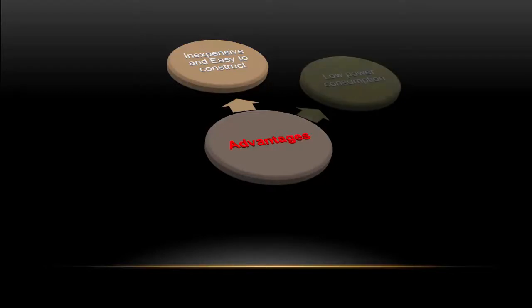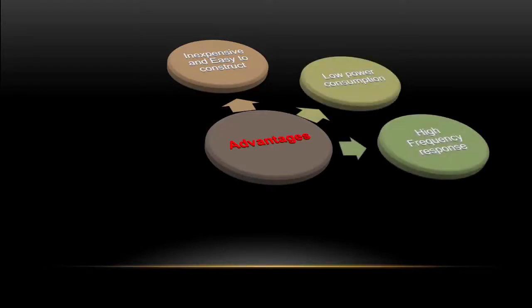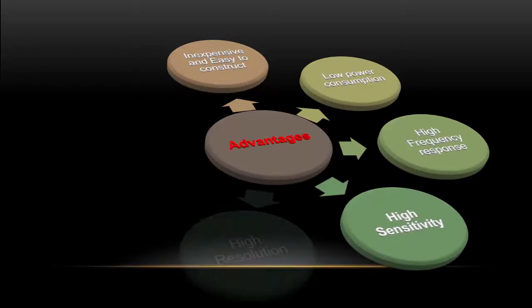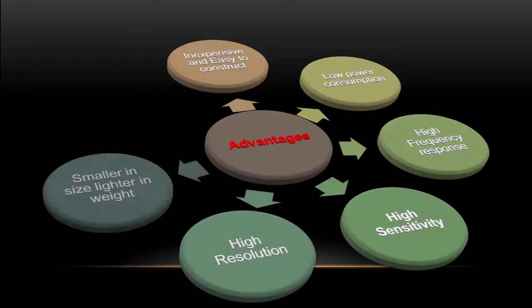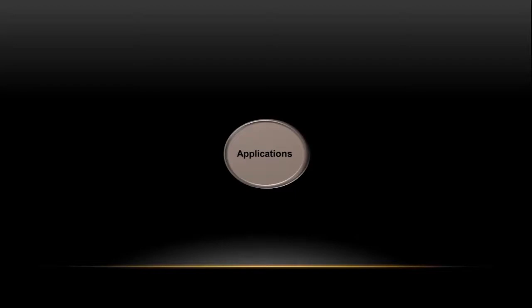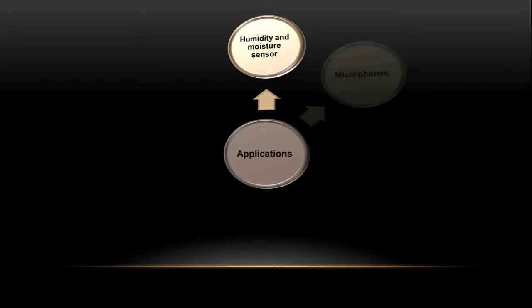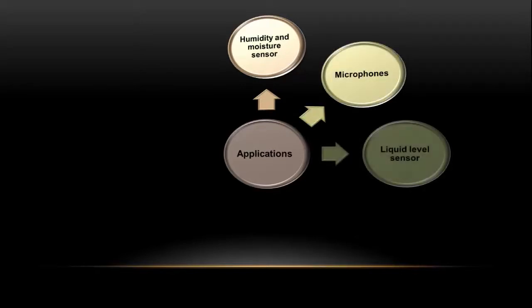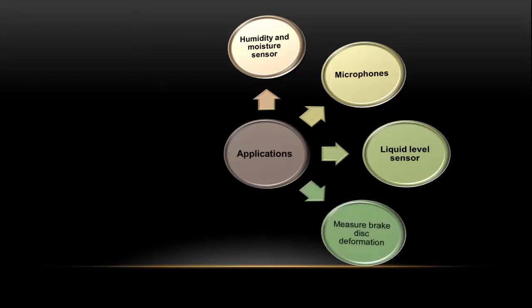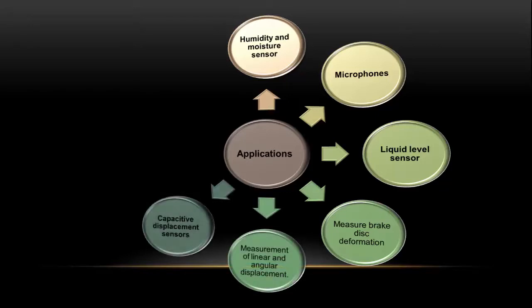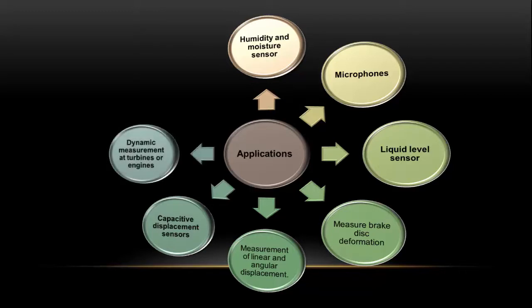Advantages of capacitive transducers: they are inexpensive and easy to construct, have low power consumption, high frequency response, high sensitivity, high resolution, smaller size, lighter weight, and high output impedance. Applications include humidity and moisture sensors, microphones, liquid level sensors, disc deformation measurement, measurement of linear and angular displacement, capacitive displacement sensors, dynamic measurements at turbines and engines, and thickness measurements.